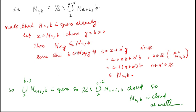Now we prove N(a,b) is closed as well. We have the identity N(a,b) = Z \ [union from i=1 to b−1 of N(a+i,b)]. Each N(a+i,b) is open (as just proved), so the union of open sets is open. Z minus an open set is the complement of an open set, which is a closed set. Therefore N(a,b) is closed. So N(a,b) is both open and closed.